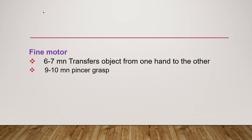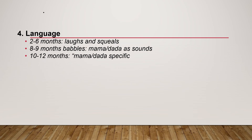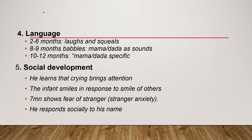Regarding fine motor: at six to seven months, they transfer objects from one hand to the other. At nine to ten months, the pincer grasp develops. Regarding language: at two to six months they coo and laugh; at eight to nine months they babble and say 'mama' and 'dada' as non-specific sounds; at ten to twelve months they say 'mama' and 'dada' specifically. Regarding social development, babies learn that crying brings attention, smile in response to others' smiles, and at seven months they start to show stranger anxiety, which makes clinical evaluation difficult from seven to eleven months.